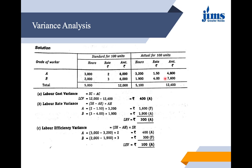For labor cost variance, subtract actual cost from standard cost to find an adverse variance of 400 rupees. For labor rate variance, (Standard Rate minus Actual Rate) into Actual Hours is calculated for A and B separately — Grade A is favorable since rate improved, Grade B is adverse — resulting in an overall adverse labor rate variance. For labor efficiency variance, Grade A is adverse and Grade B is favorable, but since Grade A effect dominates, the overall labor efficiency variance is adverse.